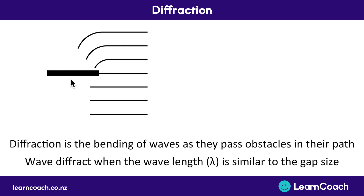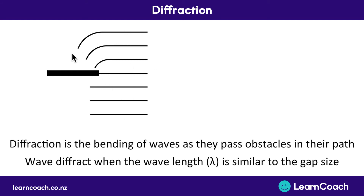We don't even need to have a gap — you might simply have one barrier, and the wave will go past that barrier and the waves will still diffract around that obstacle. It will stay straight as it moves forward, but we will have some bending around whatever obstacle is in the path of the waves.